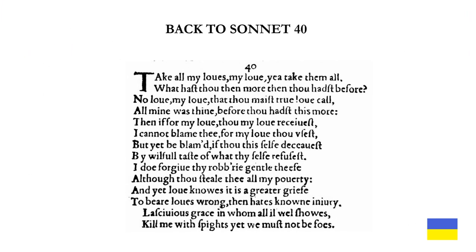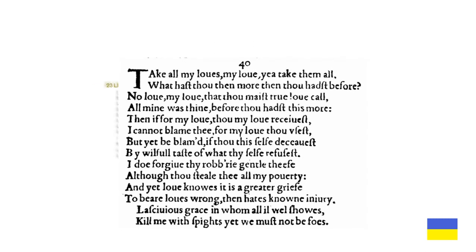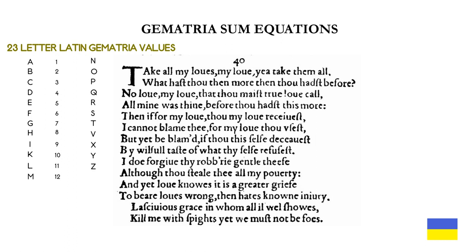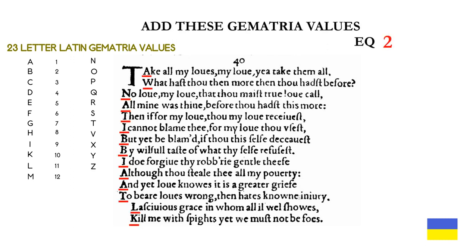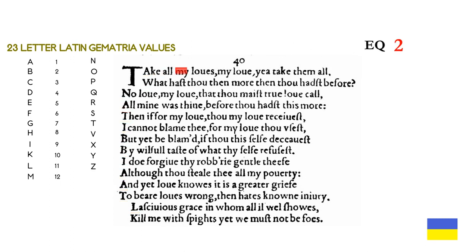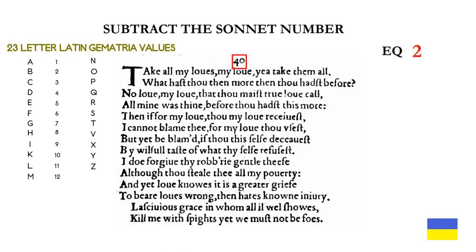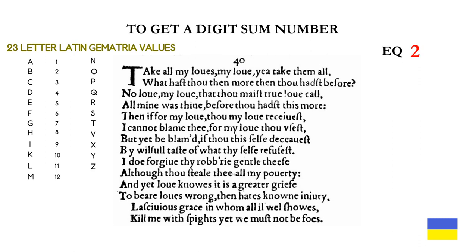This is Sonnet 40. We'll present some more gematria sum equations. Add these gematria values again — the lowercase or the smaller uppercase letters. This is equation 2 from Sonnet 40. We subtract the sonnet number to get a digit sum number.